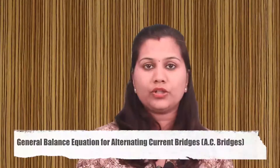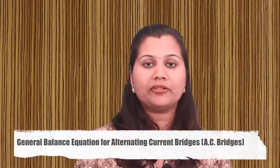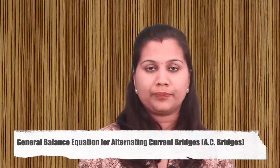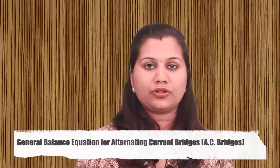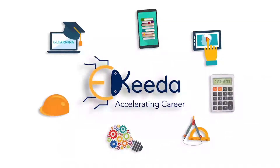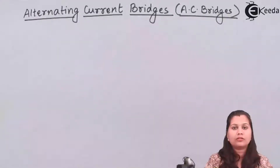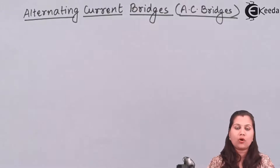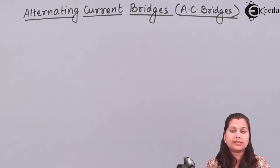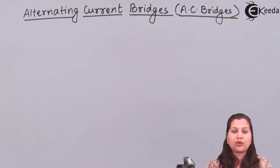Hello friends. In this video we will derive the general balance equation for the alternating current bridge network. The alternating current bridges or AC bridges are the most popular and accurate instruments which are used for the measurement of AC resistance, capacitance and impedance. Also they can be used for the measurement of storage factor and power factor.